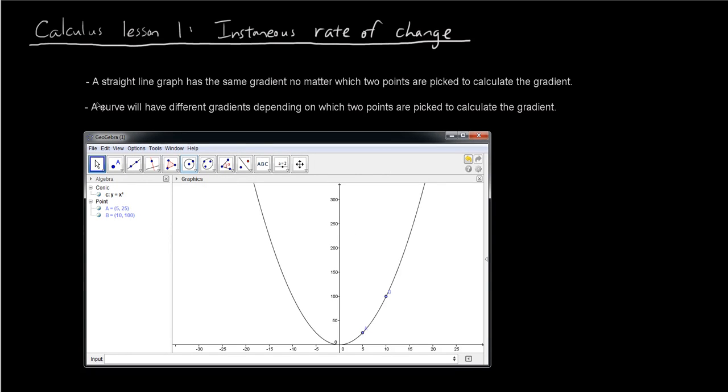Whereas a curve, the second dot point here says a curve will have different gradients depending on which two points are picked to calculate the gradient. So here, I've picked these two points and if I show you the gradient by joining these two points with a straight line, you can see that the gradient of this line, so if you right click on the line, change it to equation y equals mx plus c, the gradient is 15, because remember the gradient of a straight line is the number in front of x.